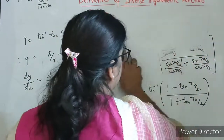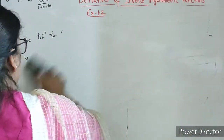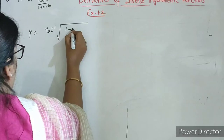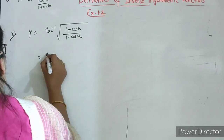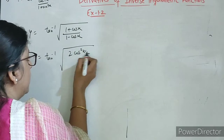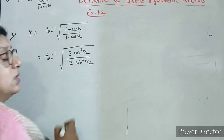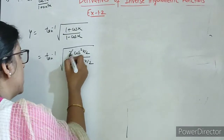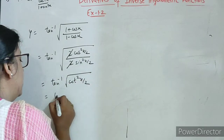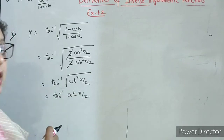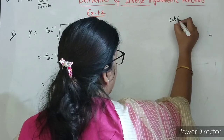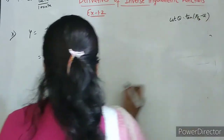Ab hum start karte hain 10th one. 10th part is y equals to tan inverse of root of 1 plus cos x upon 1 minus cos x. So 1 plus cos x ka formula is 2 cos square x by 2, and 1 minus cos x ka 2 sin square x by 2. Yeh 2 se yeh 2 cancel. So yeh ho jayega cot square x by 2. Square root se bahar nikal kar yeh ho jayega cot x by 2.